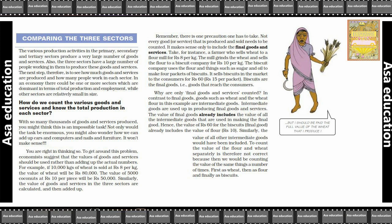In an economy there should be one or more sectors which are dominant in terms of total production and employment, while other sectors are relatively small in size. Economy mein ek ya ek se zyada sectors hote hain, jinका zyada tar main dabdaba hota hai poore production ya employment pe, jabki baaki sectors size mein chote hote hain.